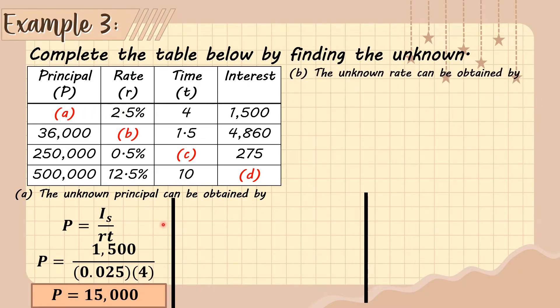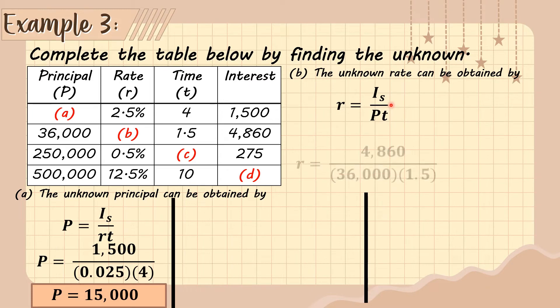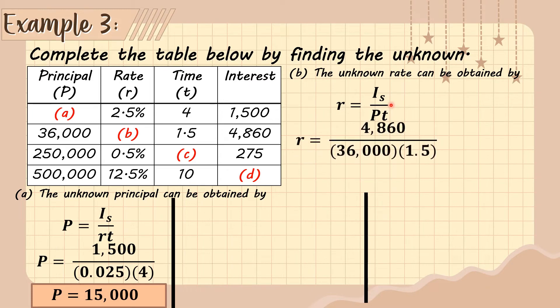For letter B, the unknown is the rate. The formula for unknown rate is r = I_s ÷ (P × t).